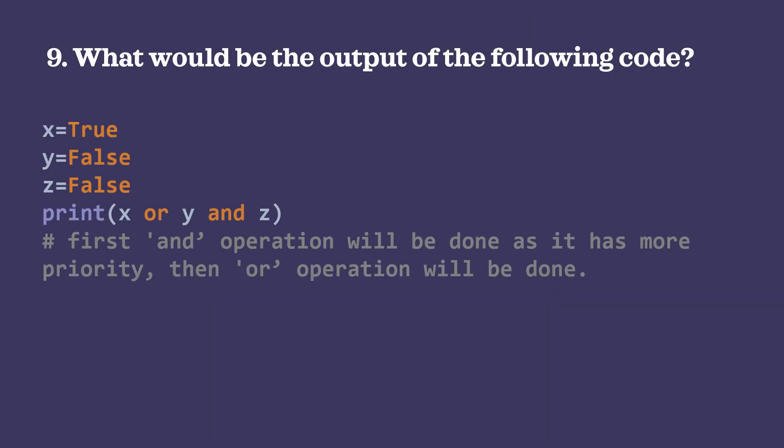Question 9: x = True, y = False, z = False. print(x or y and z). The 'and' operation has higher priority than 'or', so y and z is evaluated first: False and False = False. Then x or False: True or False = True. So the result is True.